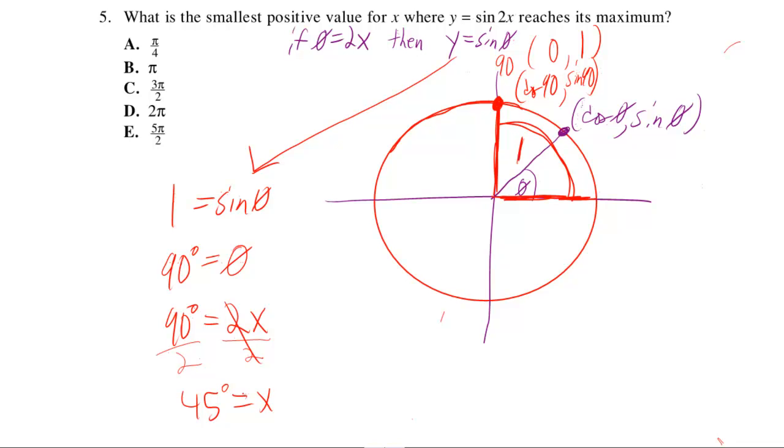But that's not one of the answers because we want an answer in radians. How do you get an answer in radians? You multiply by pi over 180 degrees so the degrees cancel out. And 45 and 180 can become a 4 on the bottom. So your answer is pi over 4.